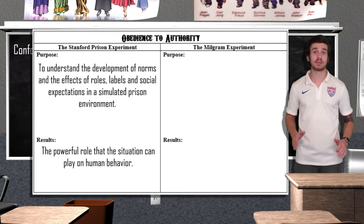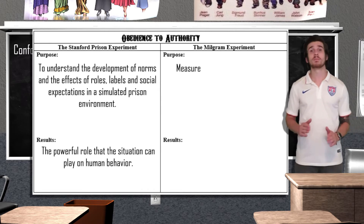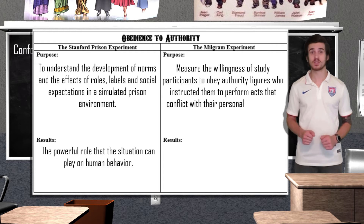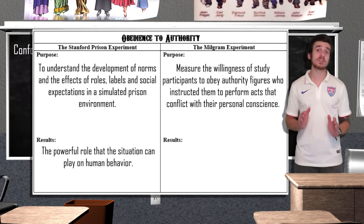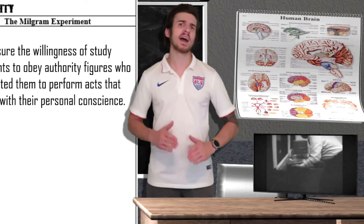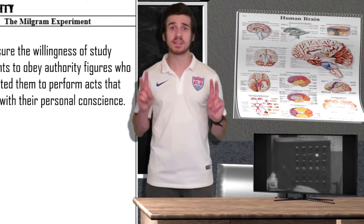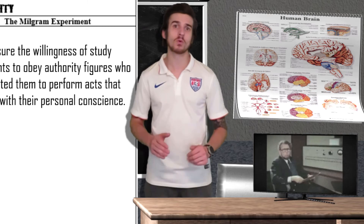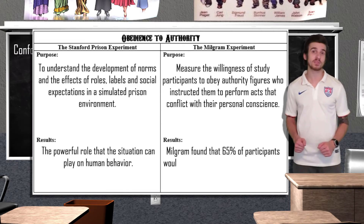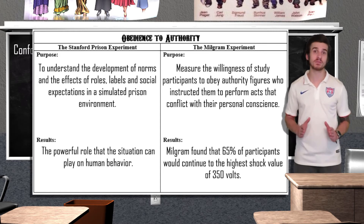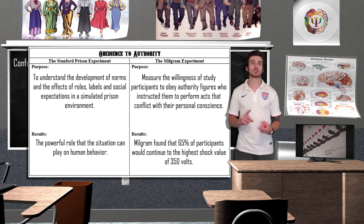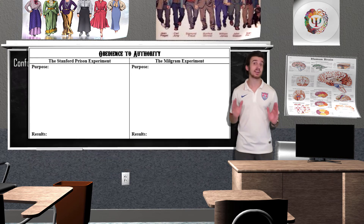There are several criticisms of the Stanford Prison Experiment today. Not only are ethical concerns linked to it, but in recent years both the reliability and validity of the study have also come under fire. Conducted in 1963, the purpose of the Milgram Experiment was to measure the willingness of participants to obey authority figures who instructed them to perform acts that conflicted with their personal conscience. The participant would have to shock an individual at increasing levels each time they answered a question incorrectly. Unknowing to the participant, they were not actually delivering high-voltage shocks — all responses from the test subject were just audio recordings. The researchers were testing how far the participant would go just because a man in a white lab coat told them to keep going. Milgram found that 65% of participants would continue to the highest shock value of 350 volts, which would definitely kill someone. Subjects were very uncomfortable, showing signs of tension and stress — sweating, trembling, biting their lips, stuttering their words.